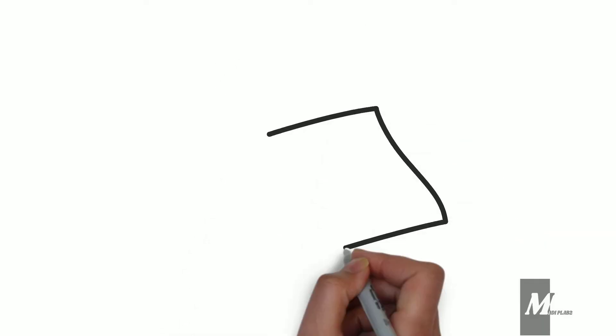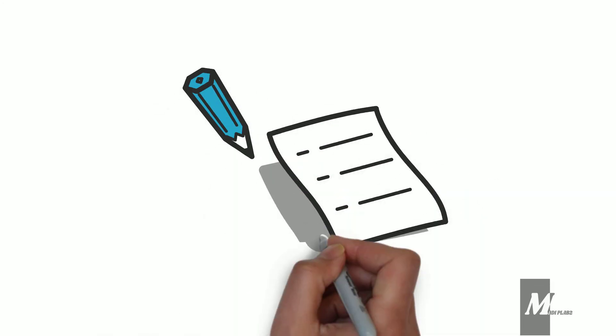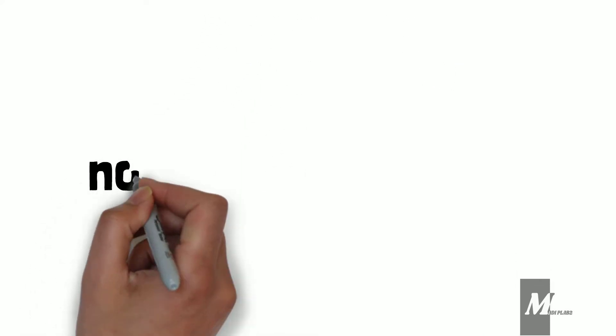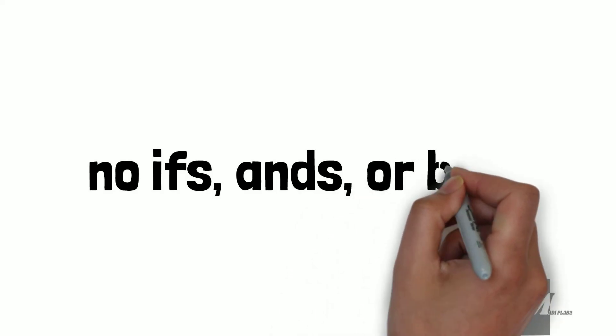Can you name those two things? Paper and pen. Can you repeat after me? No ifs, ands, or buts.